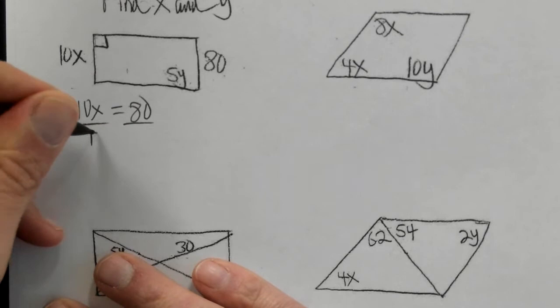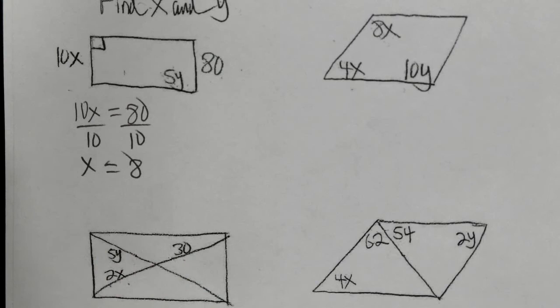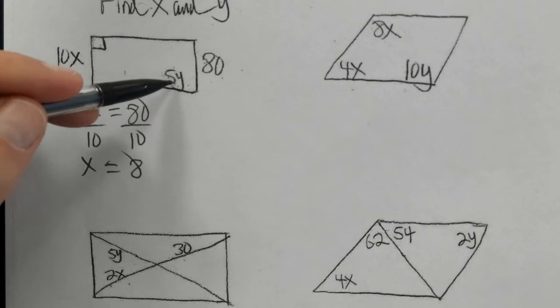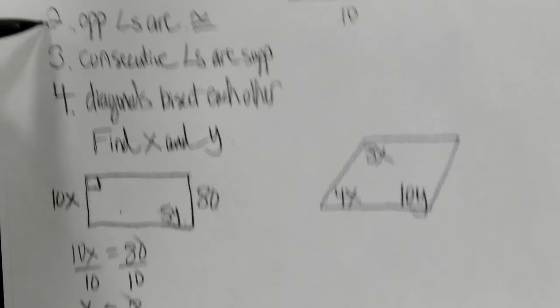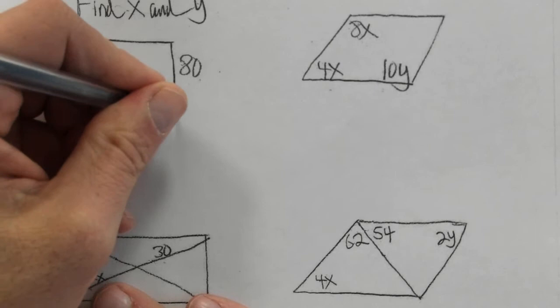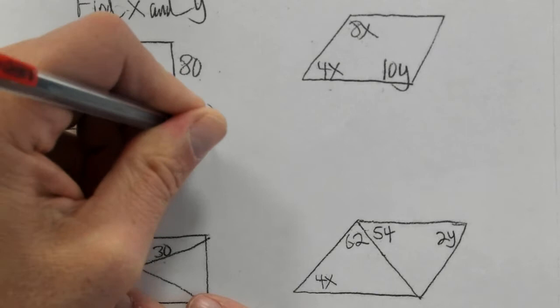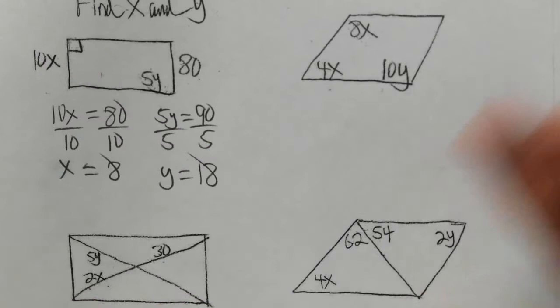Now for y: this angle is given as 5y and the opposite angle is 90. That phrase 'opposite angles' should sound familiar — in a parallelogram, opposite angles are congruent. So 5y equals 90. Dividing by 5, y is equal to 18. Those are your two answers. It's all about using the properties to set up an equation to solve for the answer you need.